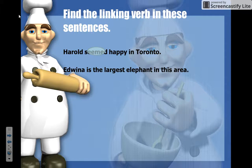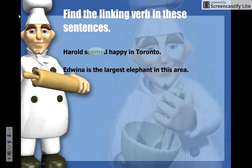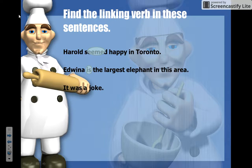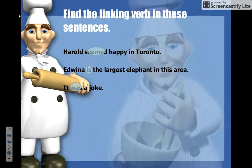'Edwina is the largest elephant in this area.' Again, we're looking for one of those words on the list — a word where we could put an equal sign to link the subject to the predicate. Edwina is the subject, so 'Edwina equals largest elephant in the area.' So 'is' is our linking verb. 'It was a joke.' Looking for something that links the subject to the predicate — 'it equals joke.' So 'was' is our linking verb.